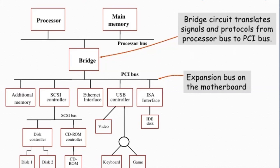You may ask why we cannot connect all devices — such as ISA interface, USB controller, Ethernet interface, SCSI controller, and additional memory — directly to the processor bus. The answer is that there are restrictions on what can be connected to the processor bus, which is why these components are managed separately on the PCI expansion bus.